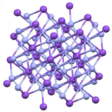Cyanate is isoelectronic with carbon dioxide and with azide, being linear. The CN distance is 121 pm, about 5 pm longer than for cyanide. Potassium cyanate is isostructural with potassium azide.